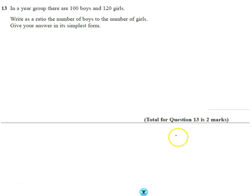Right, question number 13. It says in the year group there are 100 boys and 120 girls. Write as a ratio the number of boys to the number of girls, and then it says give the answer in the simplest form.